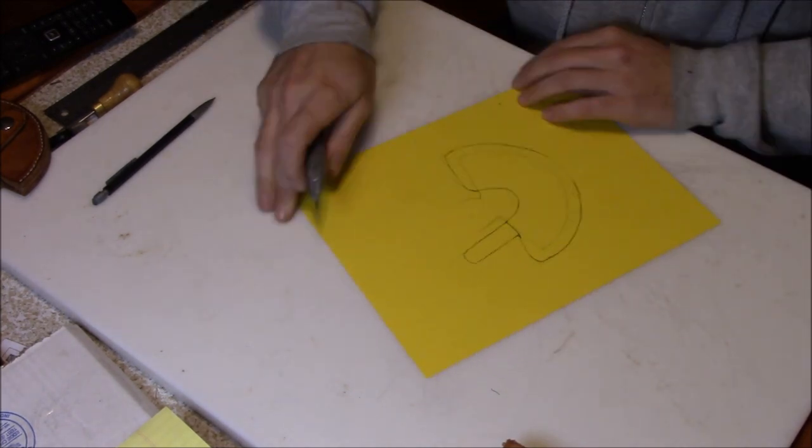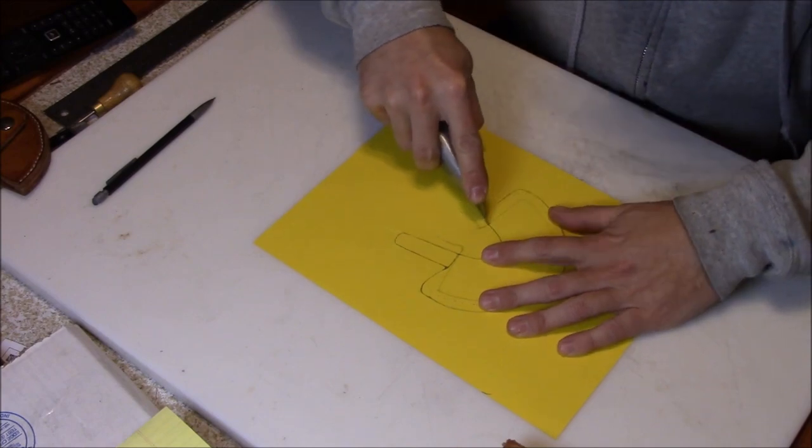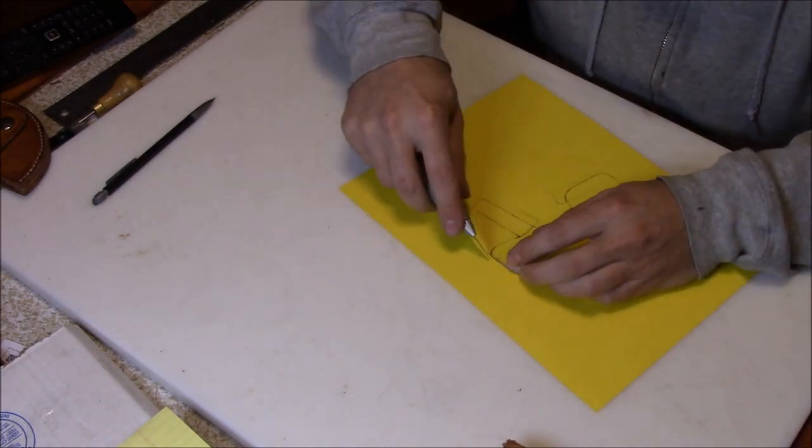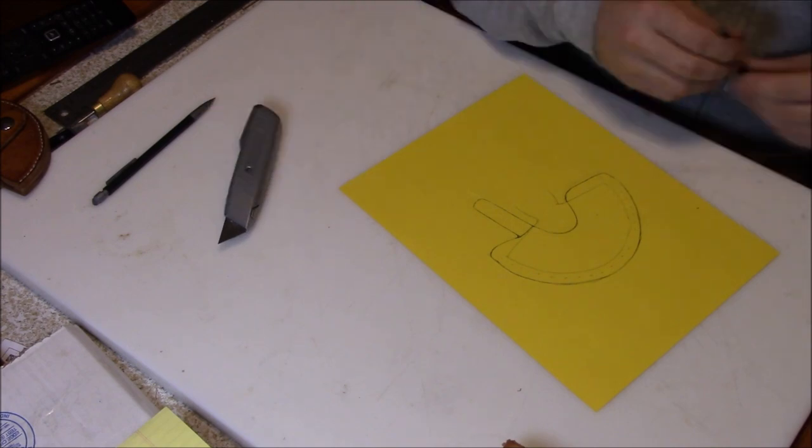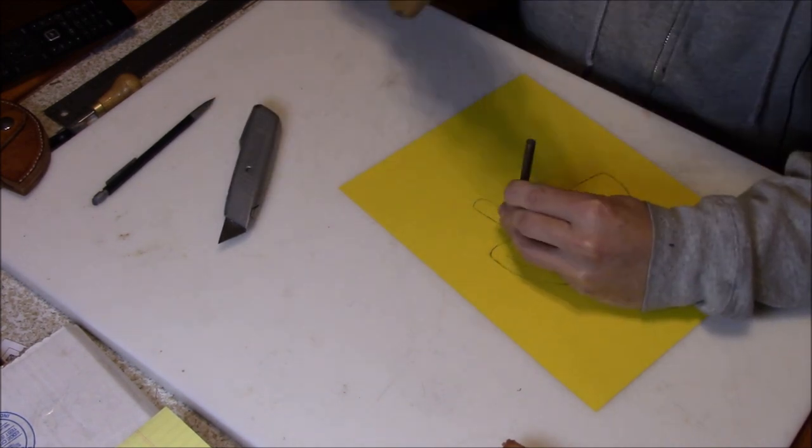This will be the back part of the sheath. The front part will be the same thing only reversed, so you basically flip the piece of paper over and then you cut off the tab so that you don't have it on there.